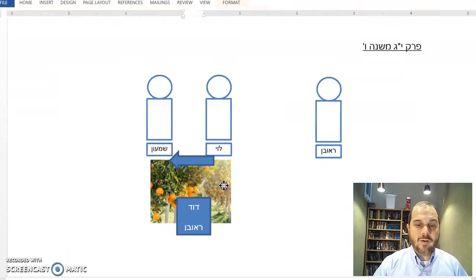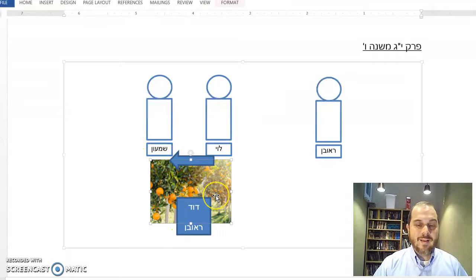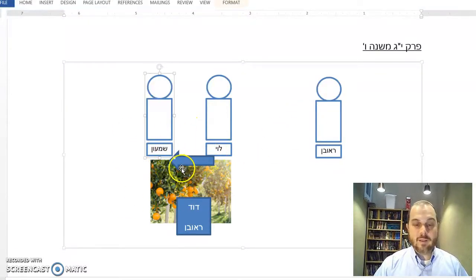So does the fact that Reuven signed on the sale contract indicate that he has no problem with Levi owning the field or not? Reuven says, that field was mine, Shimon, give me the field. Levi never had the right to sell it to you. And Shimon says, what? Reuven, you signed the contract.